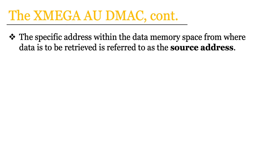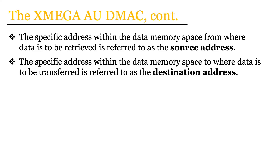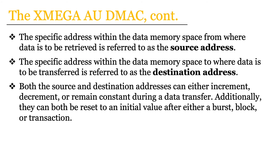A couple other things to note from the documentation: the specific address within the data memory space from where data is to be retrieved is referred to as the source address, and conversely the address to where data is to be transferred is referred to as the destination address. Both the source and destination addresses can either be incremented, decremented, or remain constant during some data transfer, and additionally they can both be reset to an initial value after some burst, block, or transaction during a DMA data transfer.